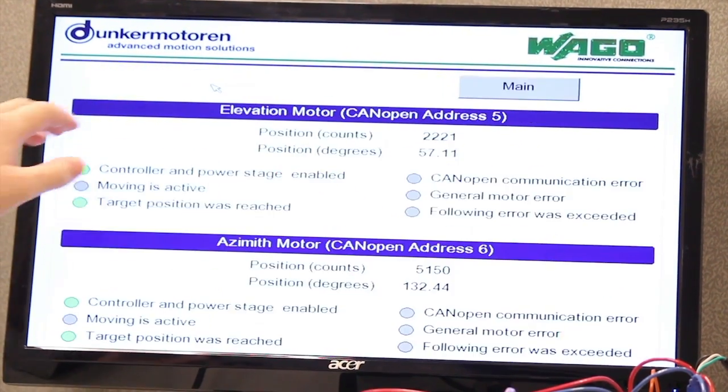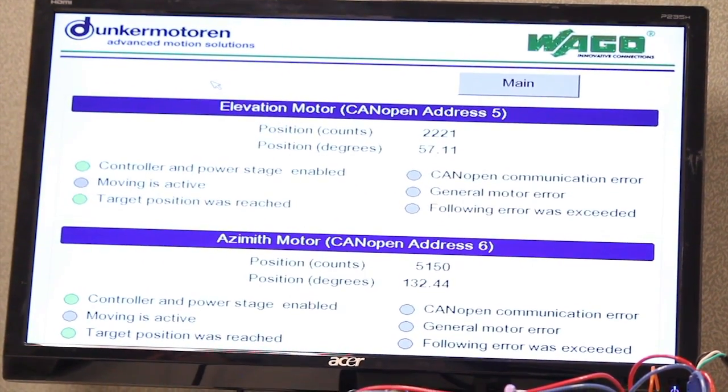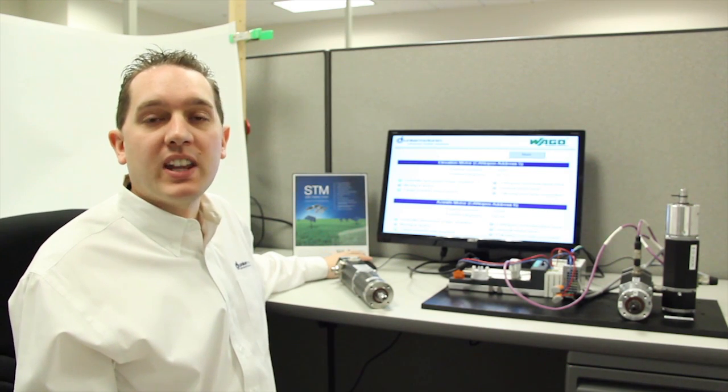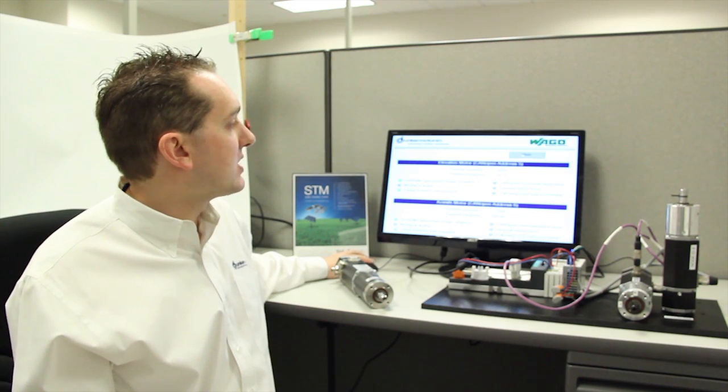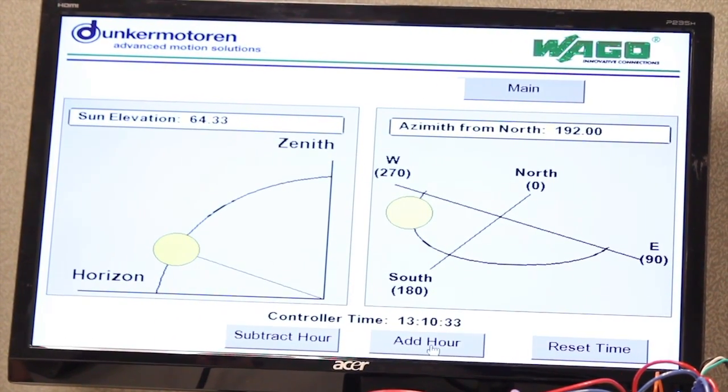This angle is then translated from degrees into position counts, which is sent to the motors over the CAN bus as a target position. As you can see with this accelerated simulation, the STM motors accurately track the sun throughout the day and stow after sunset.